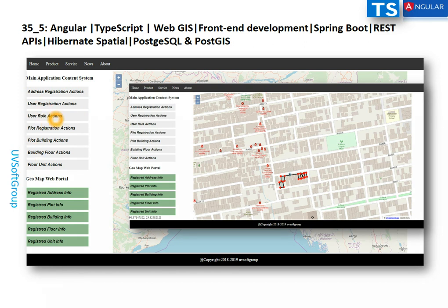There is also plot registration. In a city area, one plot can have multiple buildings; buildings have floors, and floors have units — left, right, north, south, east, and so on. This is an enterprise application for governmental use: city planners or city governments need this application to manage all buildings, floors, units, and even the owners of that infrastructure.